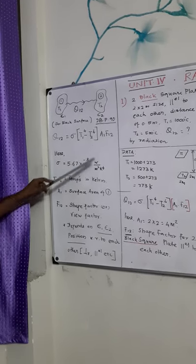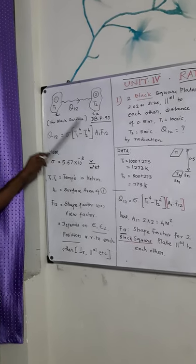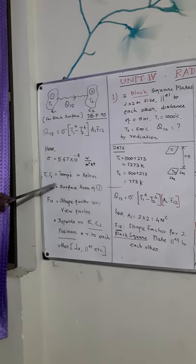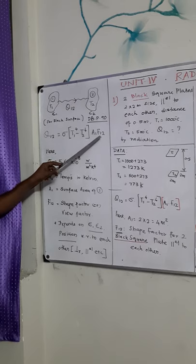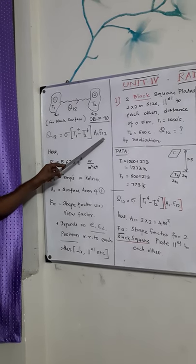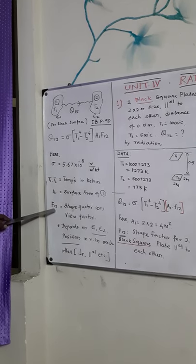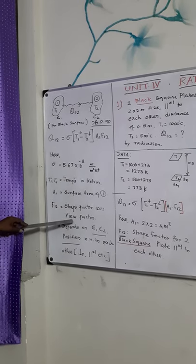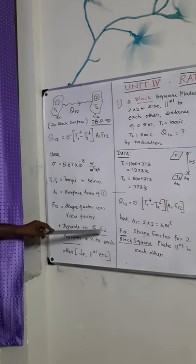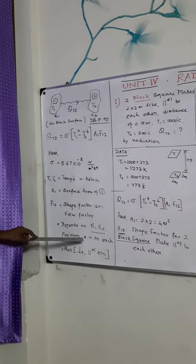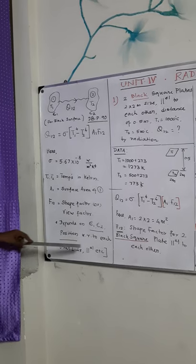And next one is, surface area of the first one. The first part, surface area, is represented as A1. And another one is most important factor called shape factor, which is represented as F suffix 1, 2. That is, shape factor or view factor, it depends on emissivity of these two surfaces, also the orientation. That is, position of first surface with respect to another surface.